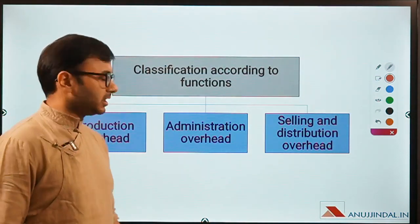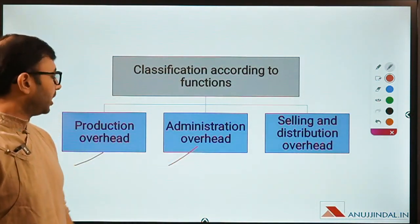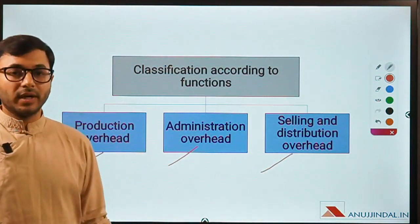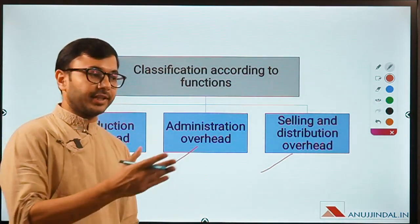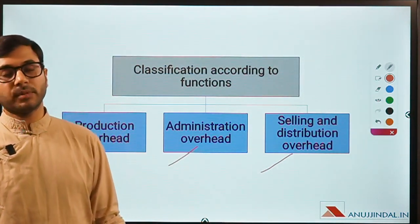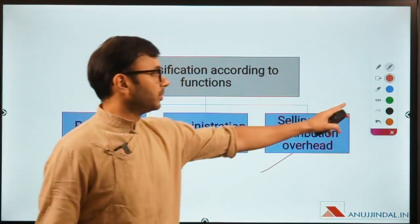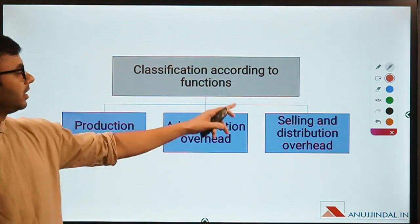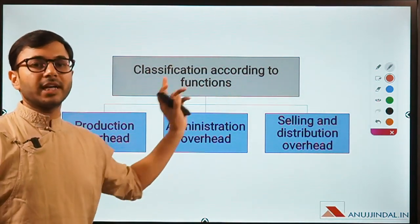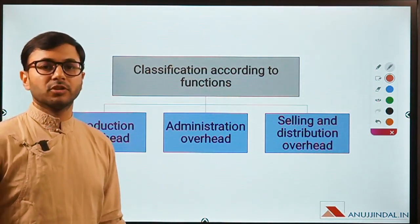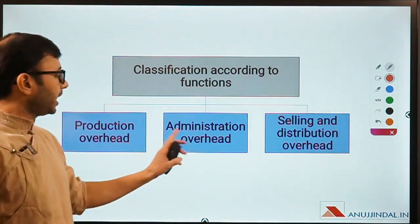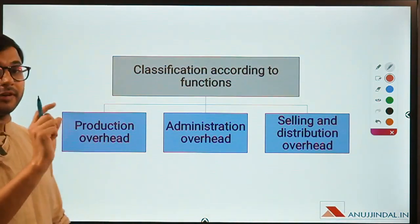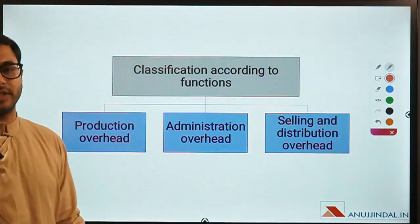Function-based classification divides overheads into three parts: production, administrative, and selling and distribution. You identify whether your overhead was a selling and distribution overhead, administrative overhead, or a production overhead. For example, if rent of rupees 5000 was paid for a building where only the administrative staff sits, that rent becomes an overhead of only the administration department — allocated based on the function of that overhead.